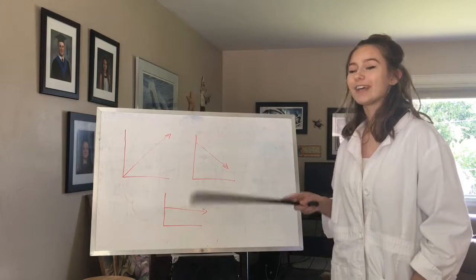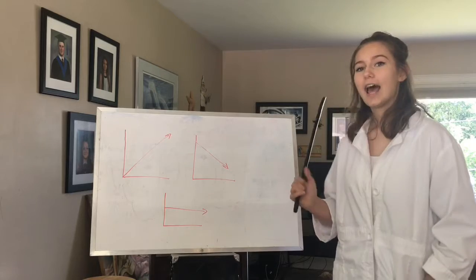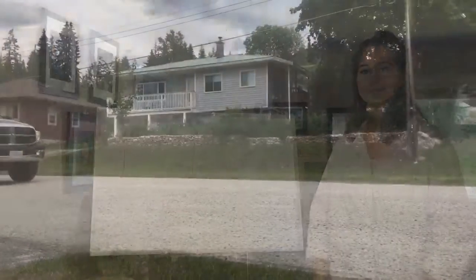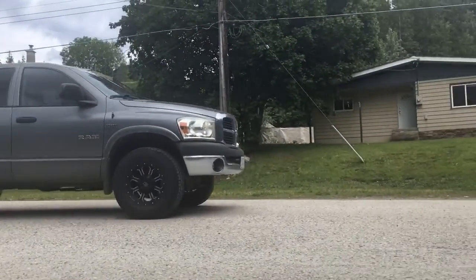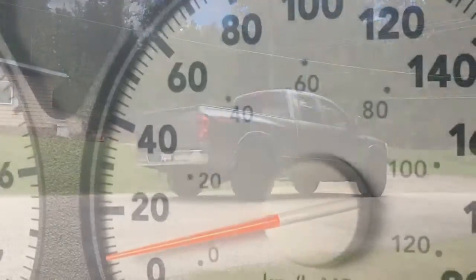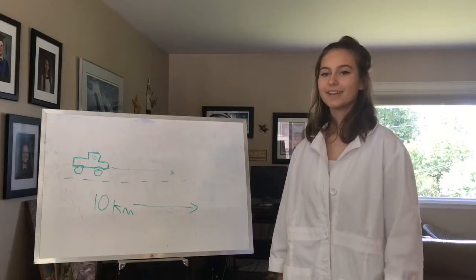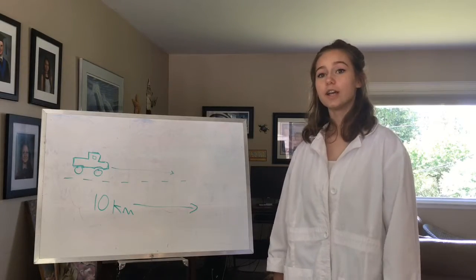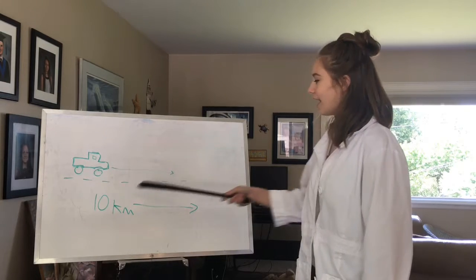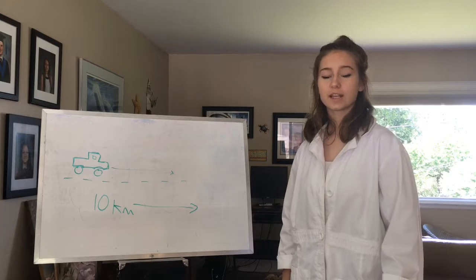Now we're going to take a look at a real-life example of uniform motion. We're going to watch my mom drive down the street at a constant speed and in the same direction. Take a look. So in the previous two videos you watched, you saw the truck moving in a constant direction at a constant speed of 10 kilometers an hour.